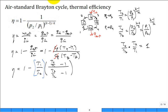So if we do that we have 1 minus and then we'll put p2 over p1 to the k minus 1 over k, and we're left with t4 over t1 minus 1, divided by t3 over t2 minus 1.